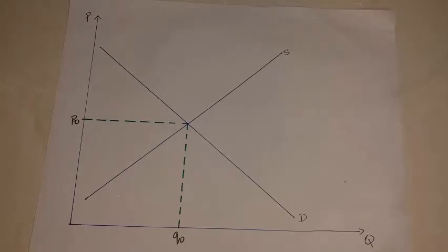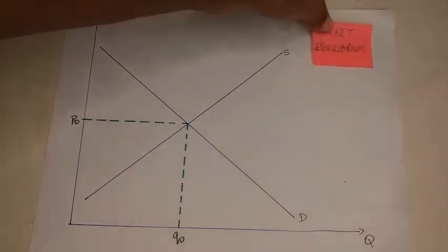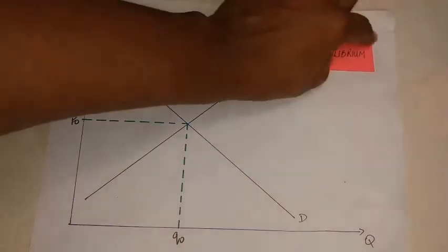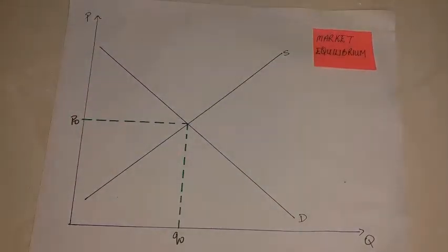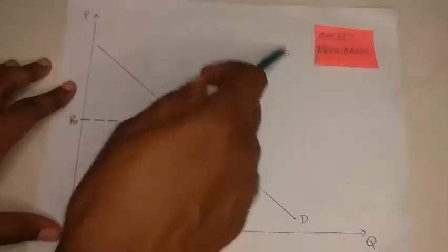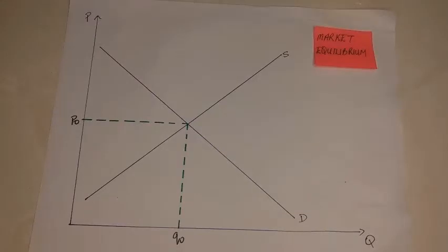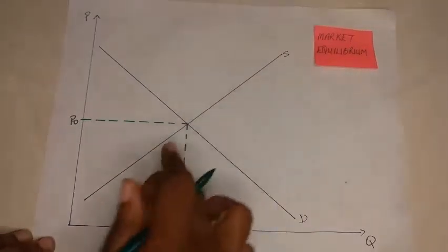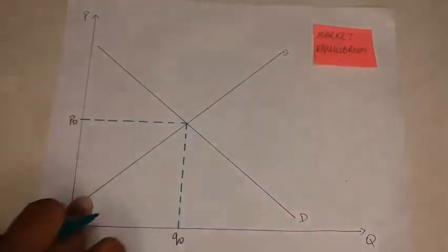Welcome back to my channel. In today's video we're going to look at the concept of market equilibrium. In the free market system, prices are determined by the interaction of demand and supply. Notice in this diagram we have both the demand curve and the supply curve interacting together. Equilibrium will occur where we have the demand curve intersecting the supply curve.